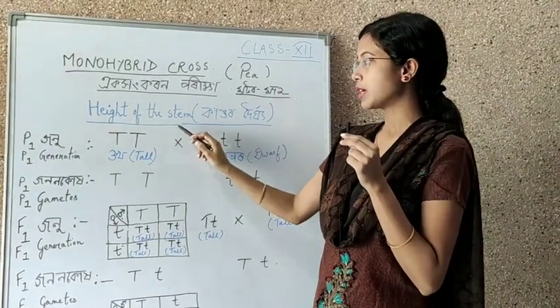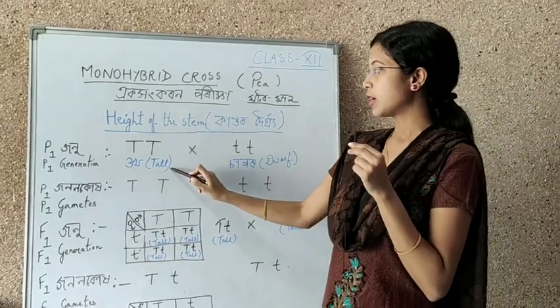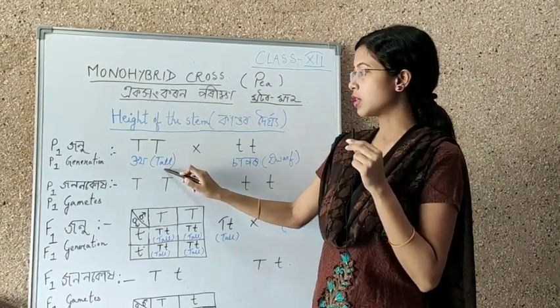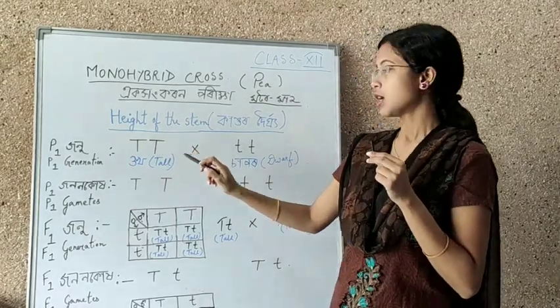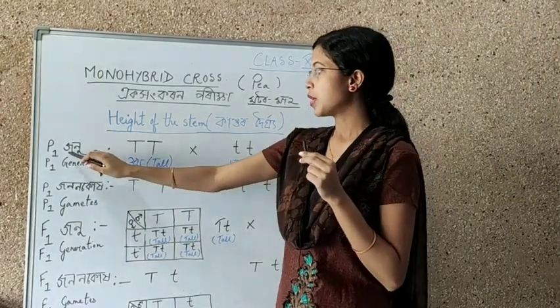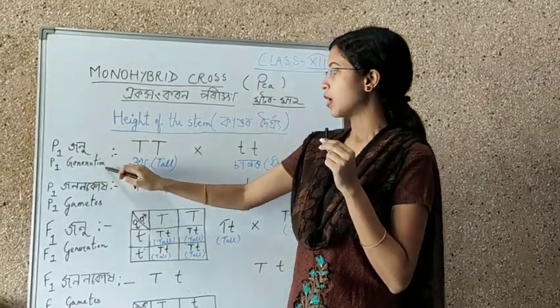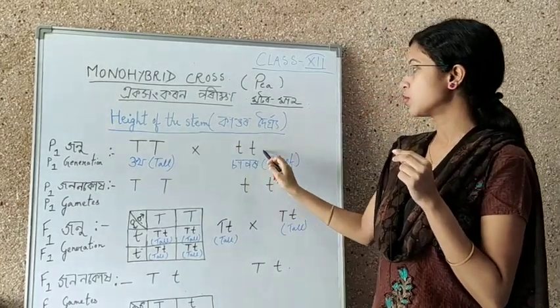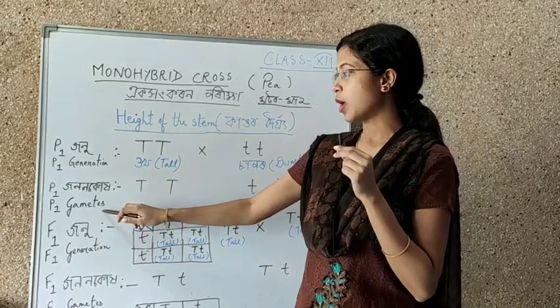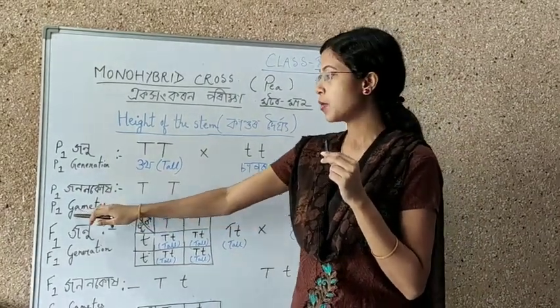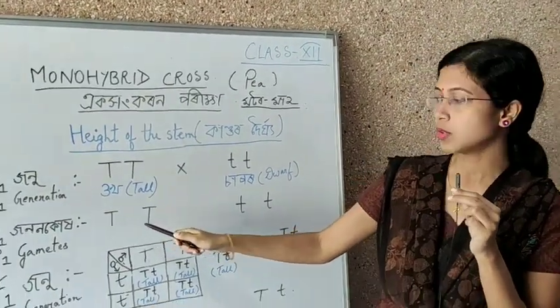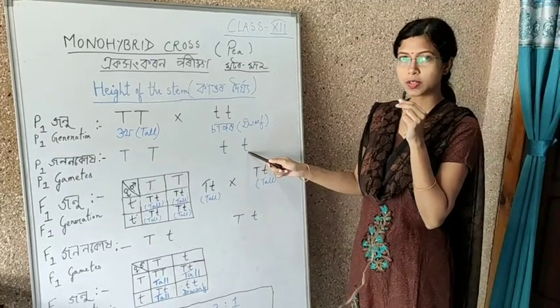The height of the stem which may be either tall or dwarf. So we have written capital T, capital T. We have written a small t, small t. And here we have written P1 generation. The original parent plants we use for cross is the P1 generation.